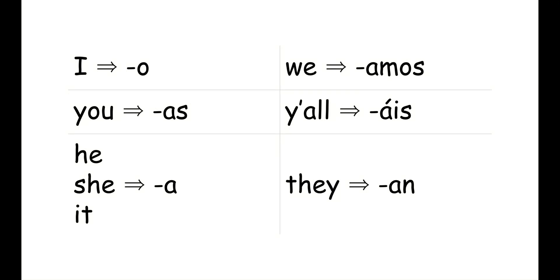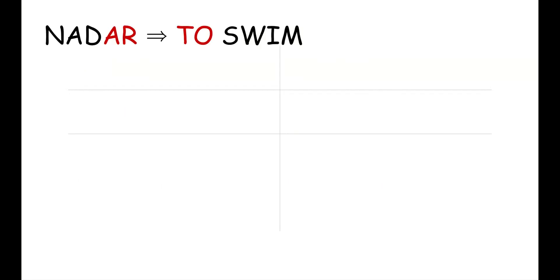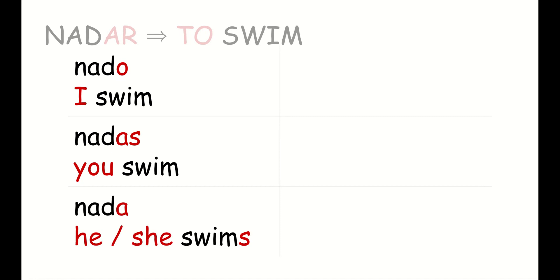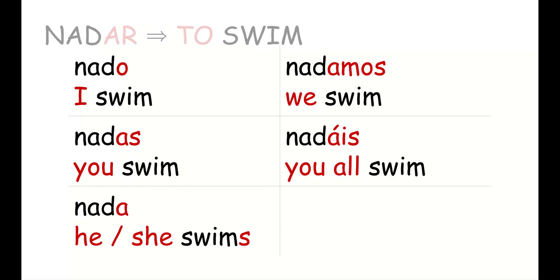In that video where we learned how to conjugate verbs that end in AR, these are the endings that we learned. We know that nadar means to swim and the AR at the end of nadar means to. We can conjugate it by replacing that AR with different endings to mean different things. So nadó means I swim, nadas means you swim, nada means he or she swims — it could also mean it swims — nadamos means we swim, nadáis means you all swim, and nadán means they swim.